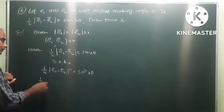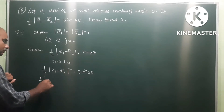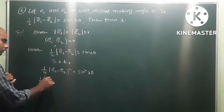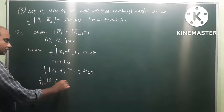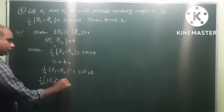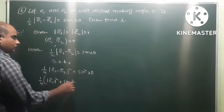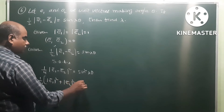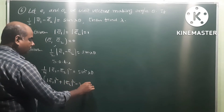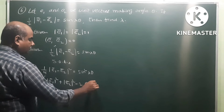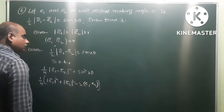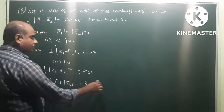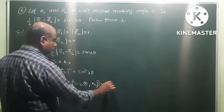So (e1 minus e2) whole square — applying the a minus b whole square formula — gives mod e1 squared plus mod e2 squared minus 2*(e1 dot e2), and that is equal to sin squared(lambda*theta).